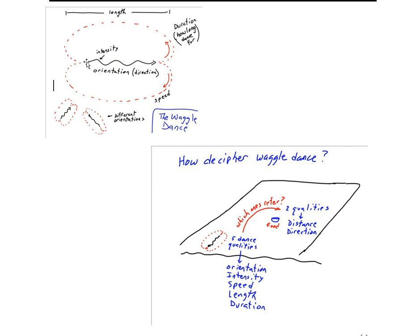So this figure eight pattern here with the waggle down the center portion is called the waggle dance. And we identified that there are several different aspects of this dance that could carry information.